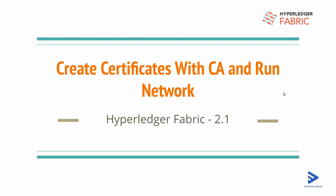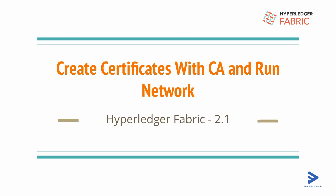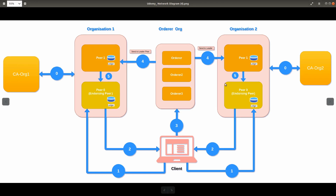In our network we have two organizations: the first one is the orderer organization and the second one is the peer organization. Inside the peer organization we again have two organizations — Org1 and Org2 — so in total we have three organizations: one orderer organization and two peer organizations.